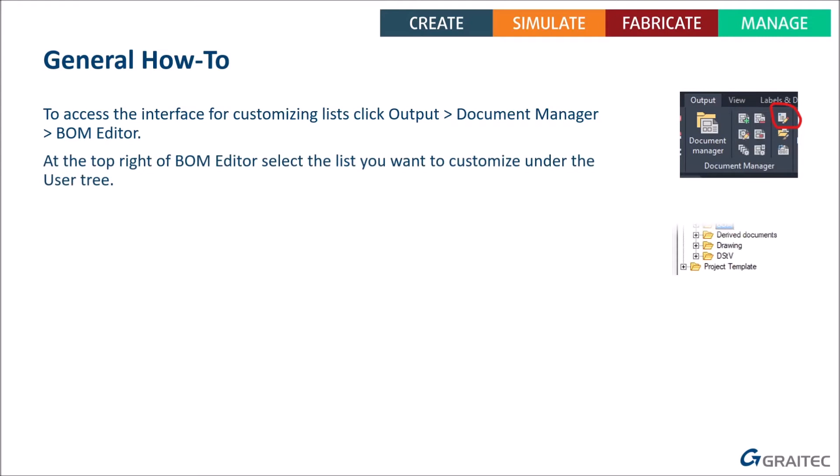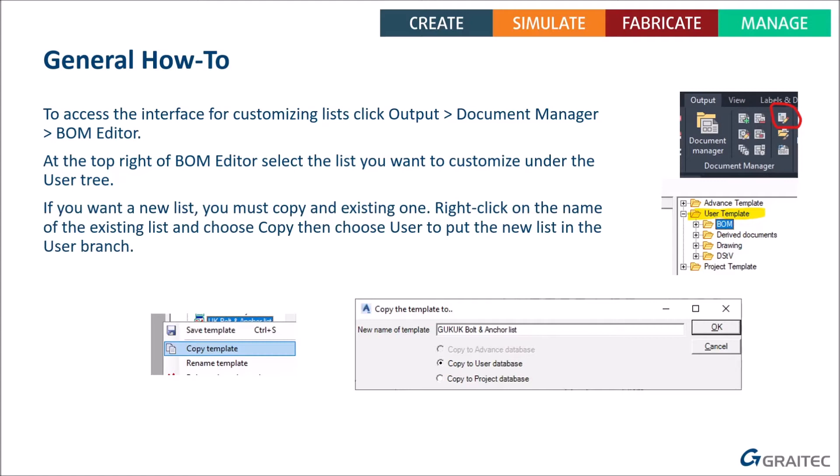At the top right of the BOM Editor interface you'll see a folder or tree structure with three branches at the top: Advanced Templates, User Templates, and Project Templates. The ones you want to edit will be found under User Templates — always look under there. You'll want to go to BOM or Derive Documents if you're on the UK build, and everything I say will be based on the UK build.